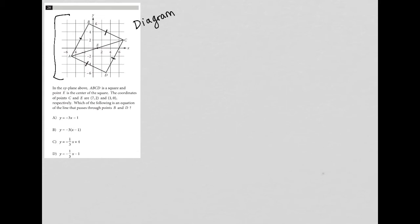The coordinates of C and E are 7, 2. So C is 7, 2. That's good to know. So I see the 2, but I need to put this as 7. And 1, 0. So this is 1, which I could have figured out, but they didn't have listed. So I'll just label that as a 1.